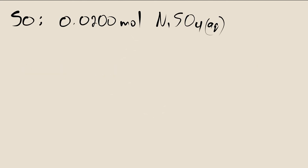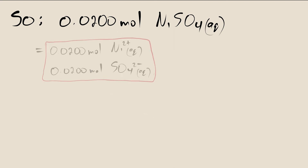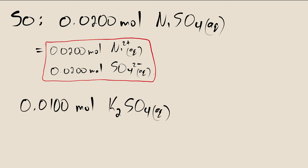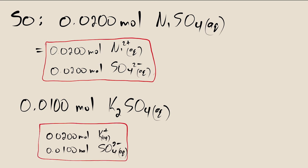In this example, there is 0.0200 moles of nickel-2 sulfate remaining in solution. Since each ion is present in a 1-to-1 ratio, that means there is the same amount of each ion in solution. There is 0.0100 moles of potassium sulfate remaining in solution, which allows us to calculate the amount of each ion separately. Remember, for every 1 mole of potassium sulfate, there are 2 moles of potassium ion.